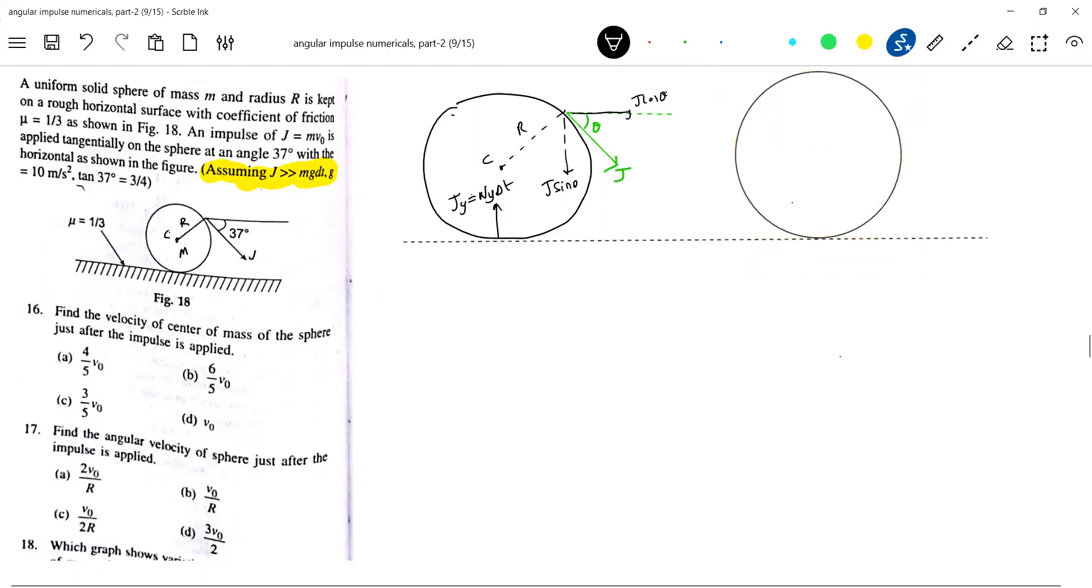Let's get into the thing now. It will impart momentum v naught. It will also set up angular impulse, and because of that, it will acquire angular velocity.